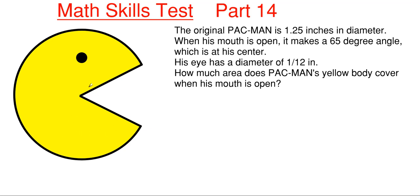So what this is saying is that this is 65 degrees right here, and from the edge of his circle, from the edge of his body to the center is where his mouth connects in. So what we're going to have to do is find out his total area of his body when he has his mouth closed, and then we are going to subtract out this white circle sector portion right here, and then subtract out his little eye.